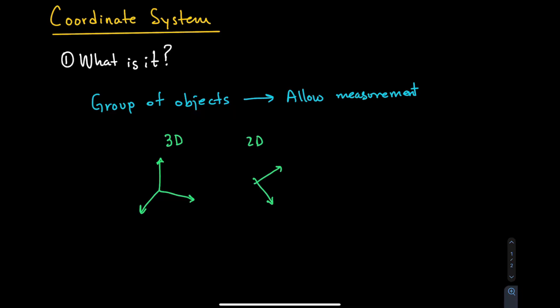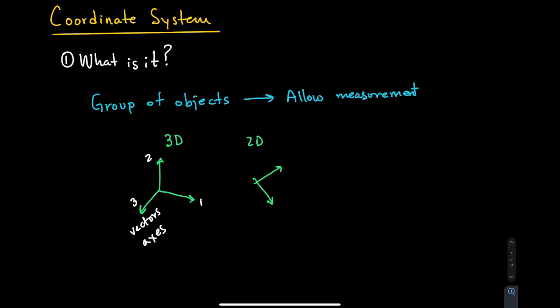In three-dimensional space we have a set of three objects that we can call direction vectors or axes. We normally assign a label to them — direction 1, 2, and 3. The same definitions apply for two-dimensional space: direction number 1 and direction number 2, giving us two axes.